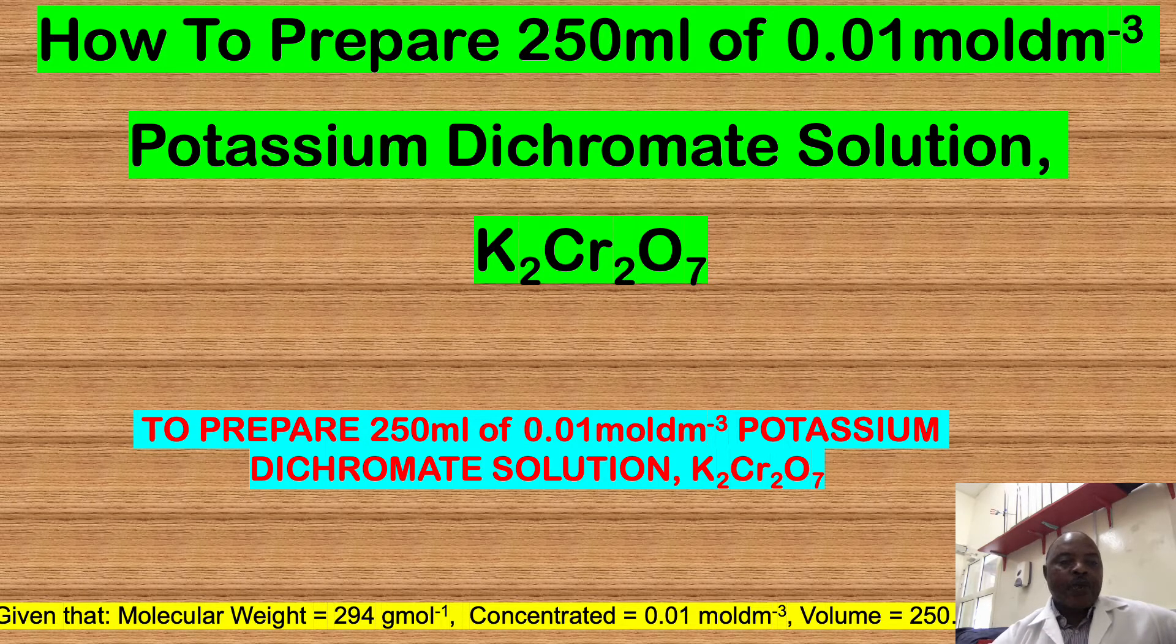To prepare 250 ml of 0.01 mol/dm³ potassium dichromate solution in the lab, beginning from scratch, the manufacturer has given everything. The molecular weight is 294 g/mol. The concentration to be 0.01 mol/dm³, the volume to be 250 ml.